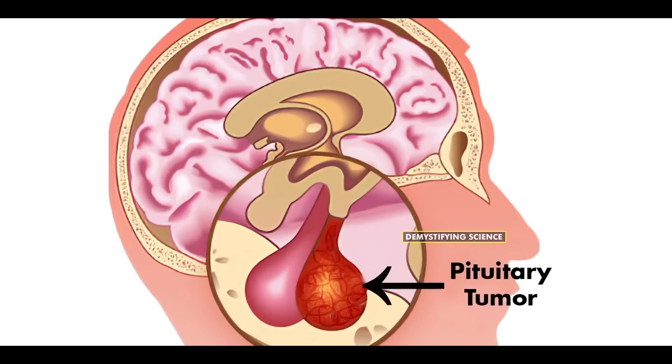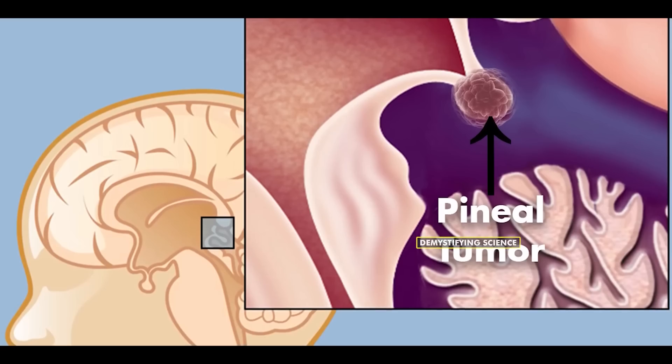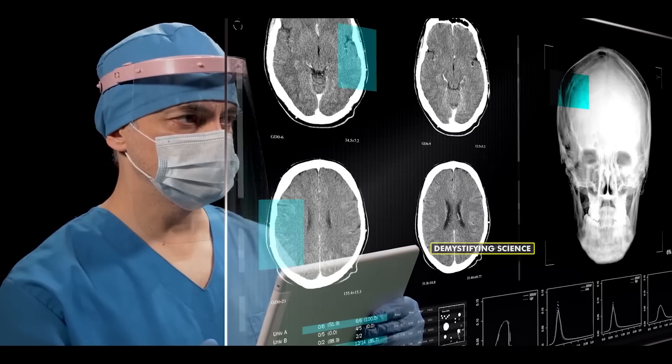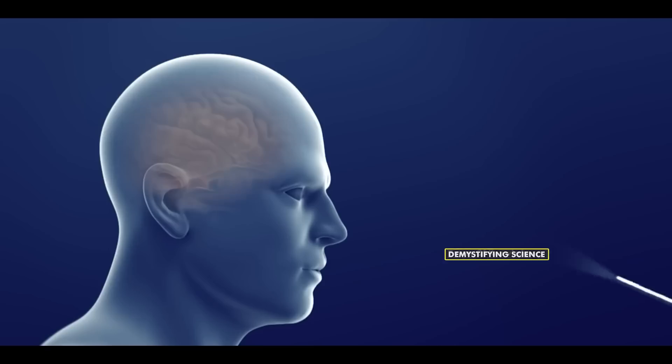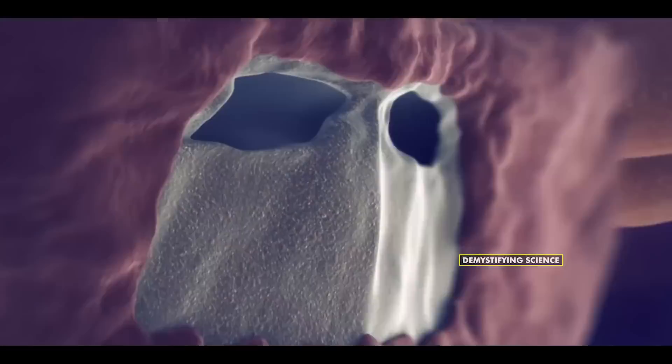For some tumors like pituitary tumors or pineal tumors, accessing them through the skull is difficult. Hence, in such cases, neuroendoscopy is done through the nose or mouth.